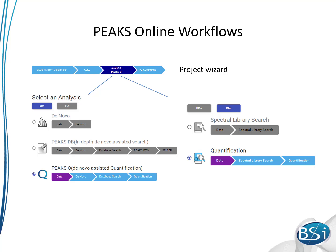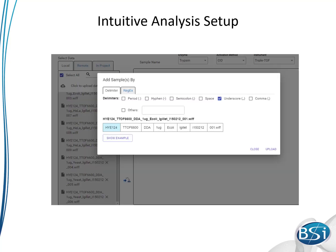Even during data loading, great attention to detail has been used to make the software user-friendly. For example, sample names can be automatically generated based on the original raw file name using some predefined delimiters, such as period, hyphen, or underscore. With thousands of samples, this can significantly cut down on the time it takes to set up your search.